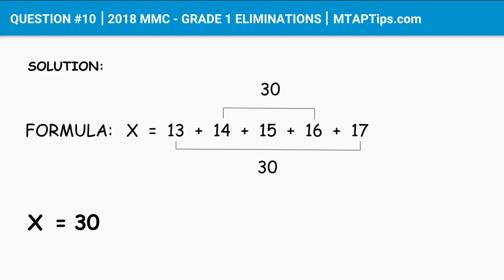Now we can say X is equal to 30 plus 30 plus 15, which is equal to 75. So the answer is 75.